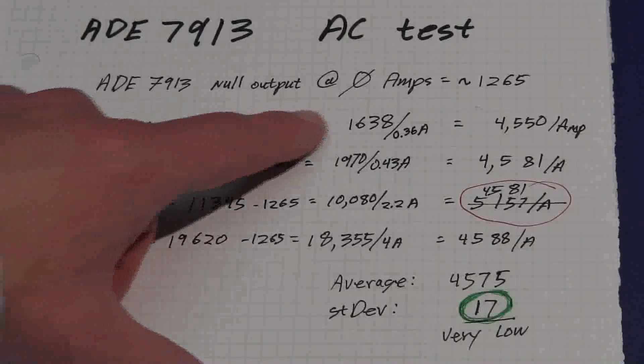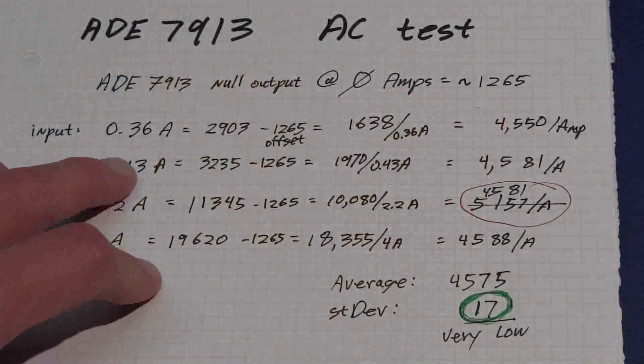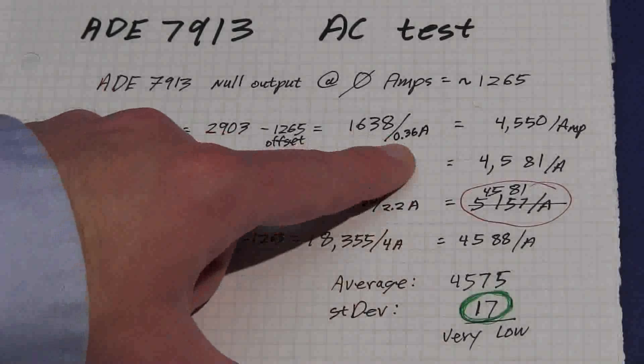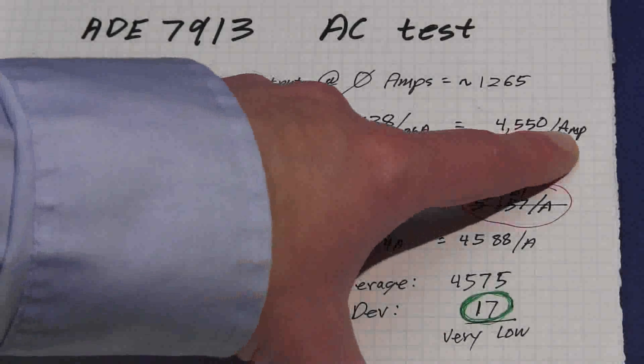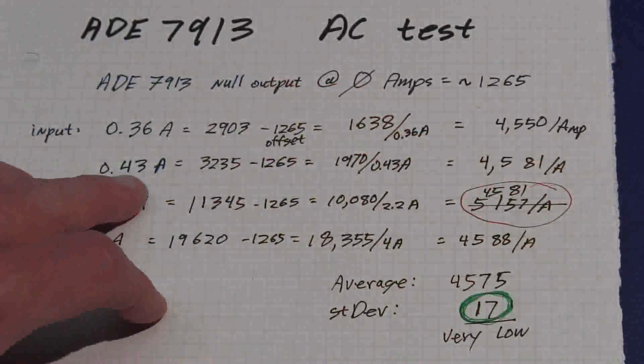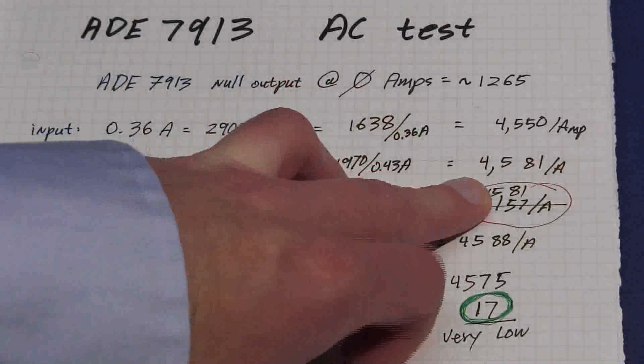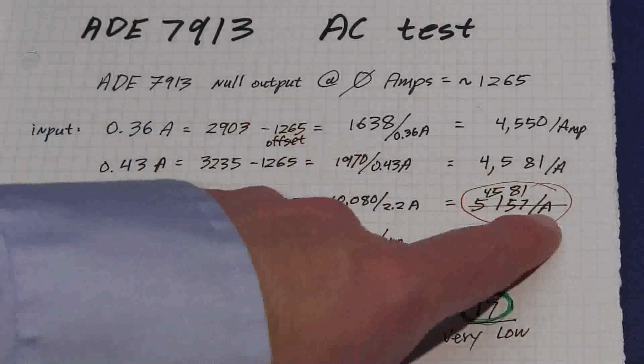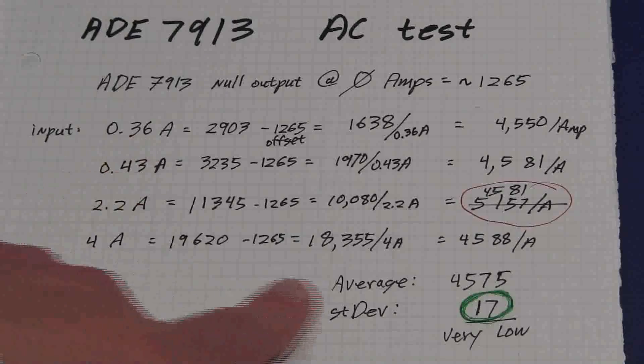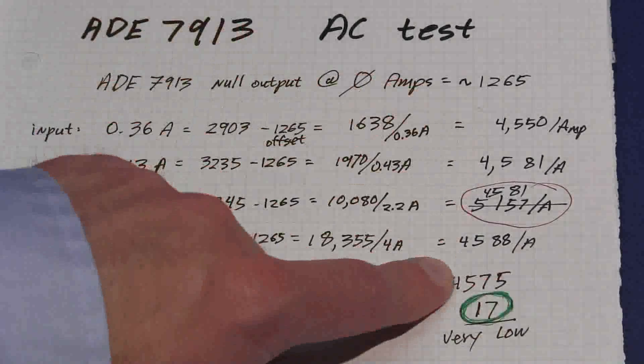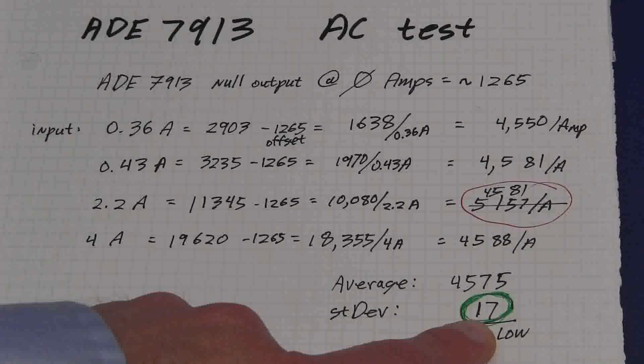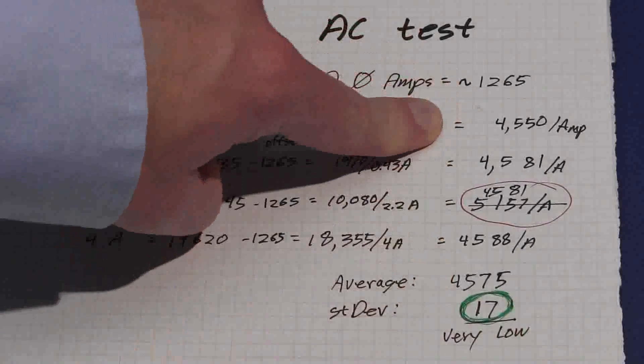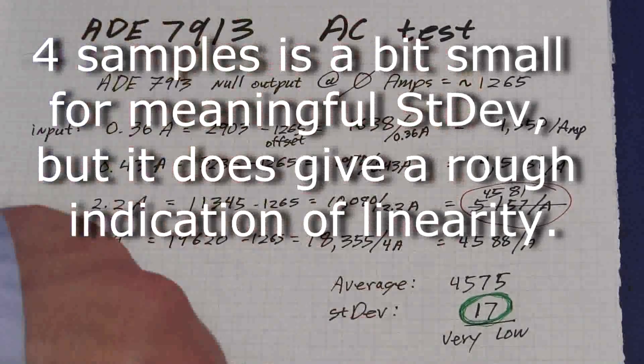So the 7913 had a null output at 0 amps of 1265. With an input of 0.36 amps, we had a reading of 2903 minus our 1265 offset, giving us 4550 counts per amp. At 0.43 amps, our reading worked out to 4581 counts per amp. At 2.2 amps, our reading was 4581. And at 4 amps, we had a reading of 4588 per amp. So again, very linear. Our average came out to 4575 with a standard deviation of only 17, which is very low. All readings fall well within 2 standard deviations. The furthest one out was about 1.5 standard deviations. So again, still very linear, very accurate. I really like that.